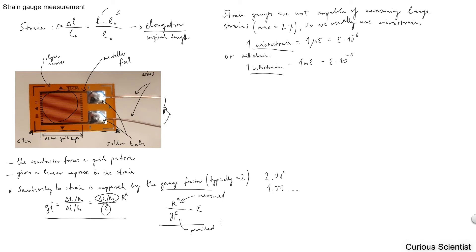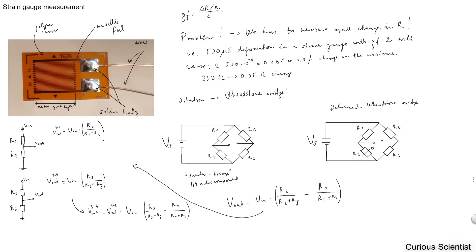That's all. We just have to measure the resistance, but that's a bit challenging. On the next slide, I show you why it is challenging. The problem is that we have to measure very small changes in the resistance. For example,